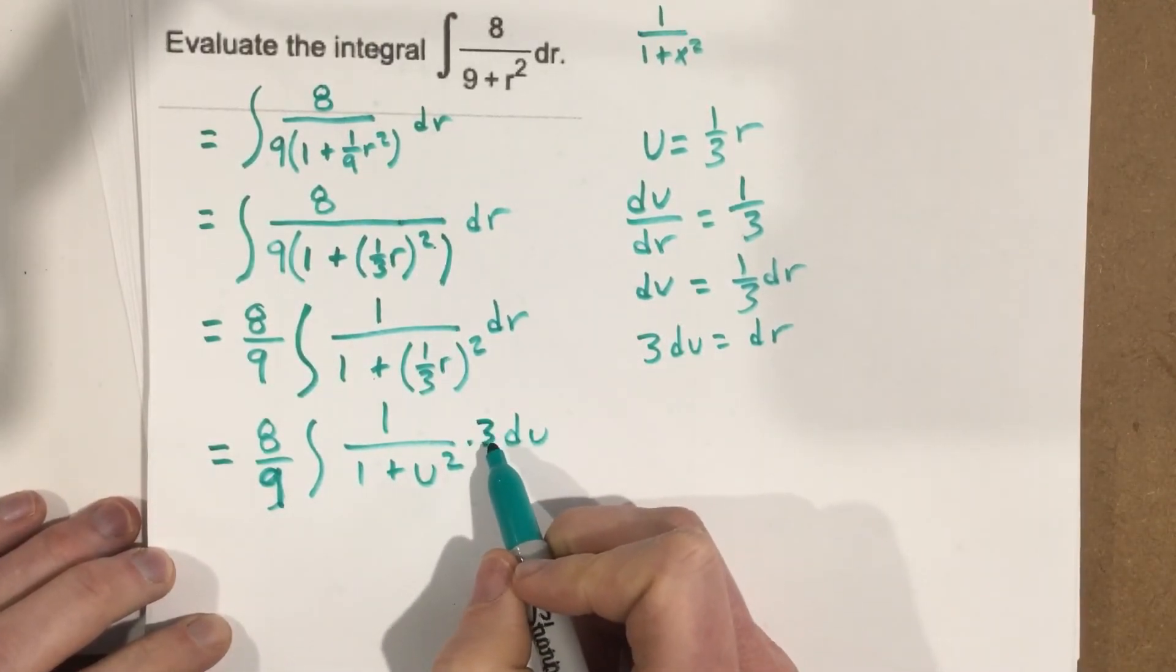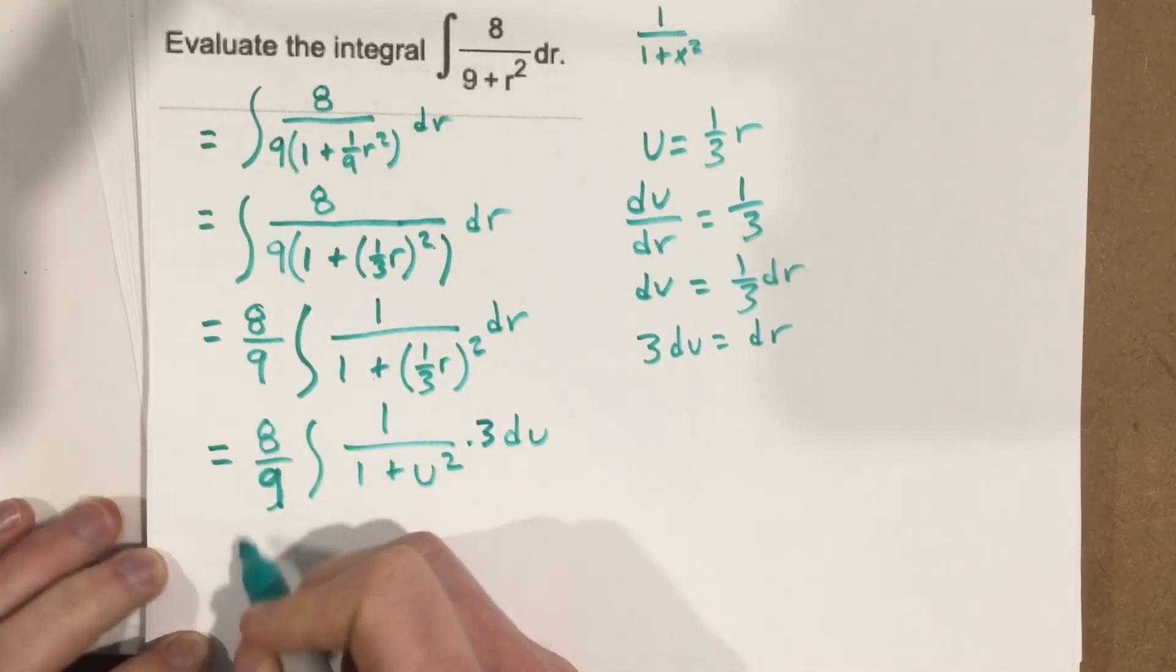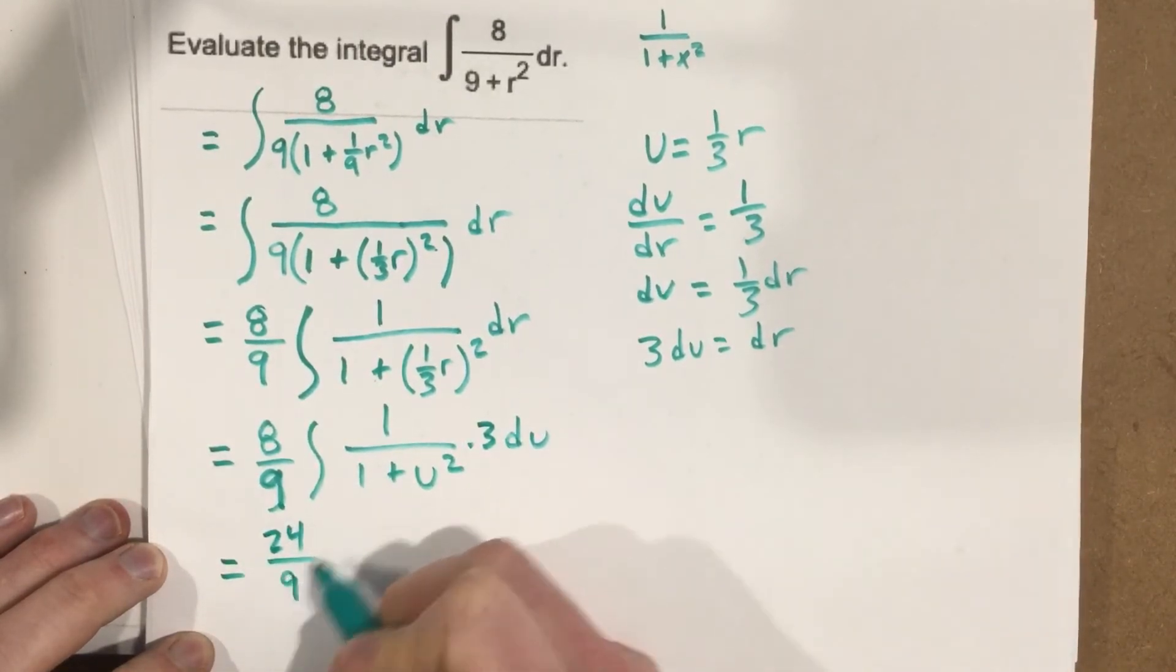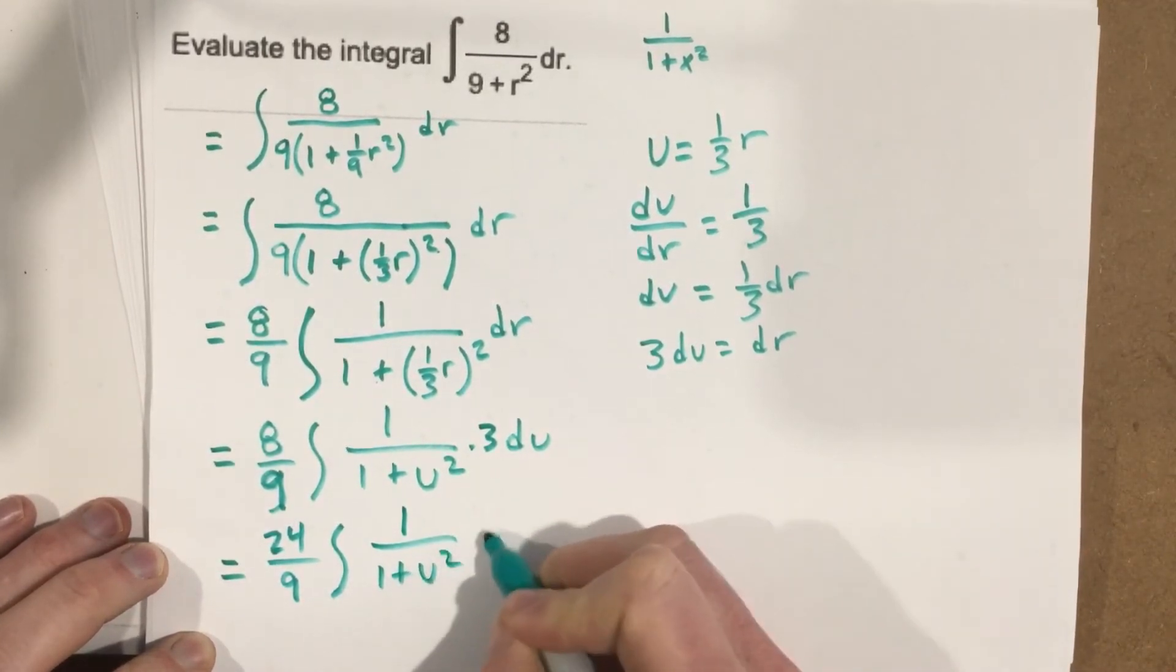I can then technically just bring the 3. The 3 would come up here. But I can just bring the 3 outside. So I end up with equals 24 over 9 integral. 1 over 1 plus u squared du.